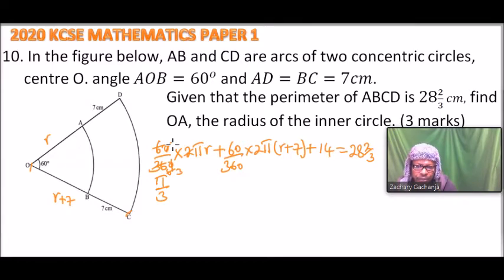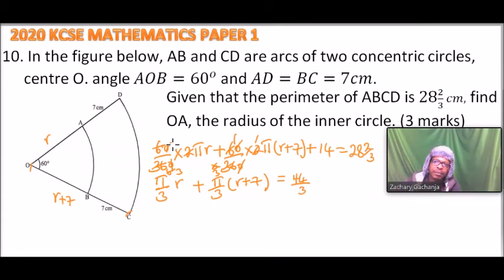We divide by 6 to get 1 over 3, so we also have π over 3 times (r plus 7). We can rearrange to get 44 divided by 3. Multiply throughout by 3, so we have πr plus π(r plus 7) equals 44.